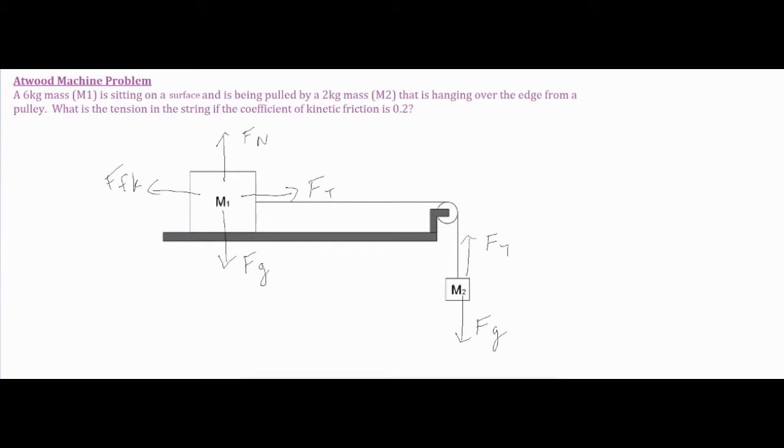The first thing you want to do is you want to set up your sum of forces in the x and y direction. But for this one it's a little bit unique because they can be pulled as one big system or you can identify two separate smaller systems. So the first thing we're going to do is we're going to take a look at M1 and M2 as one large cohesive system.